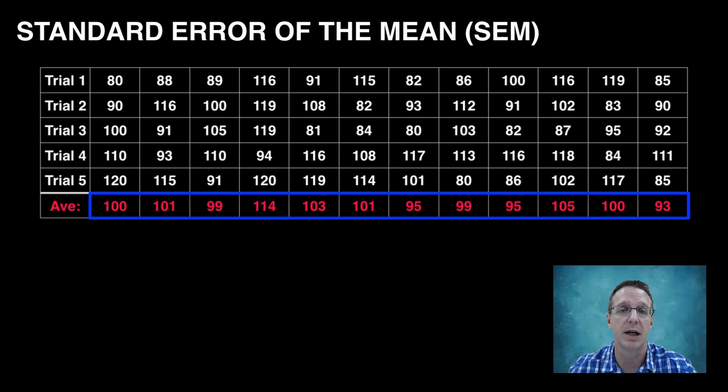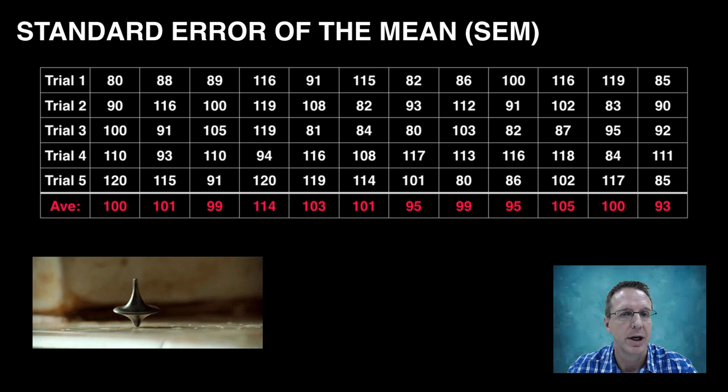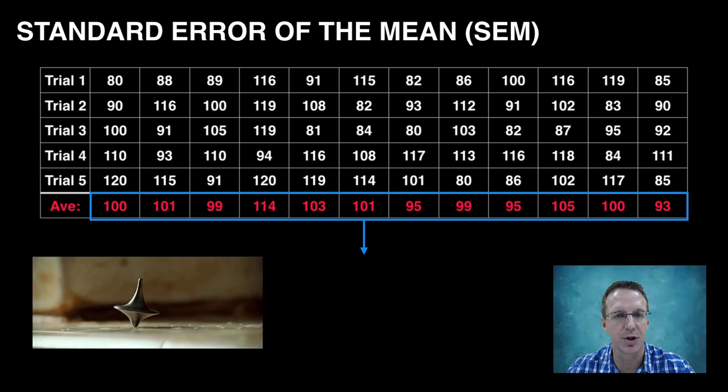And each time, we calculated the average of those five trials. That is a lot of data. And now, in a move that has inception-like qualities, we are going to go to a deeper level and actually calculate the standard deviation of all those averages from Jack's different data sets.